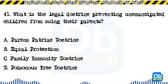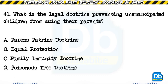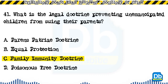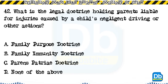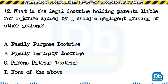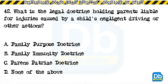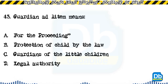Question 41: What is the legal doctrine preventing unemancipated children from suing their parents? a) parens patriae doctrine, b) equal protection, c) family immunity doctrine, d) poisonous tree doctrine. The answer is C, family immunity doctrine. Question 42: What is the legal doctrine holding parents liable for injuries caused by a child's negligent driving or other actions? a) family purpose doctrine, b) family immunity doctrine, c) parens patriae doctrine, d) none of the above. The answer is A, family purpose doctrine.